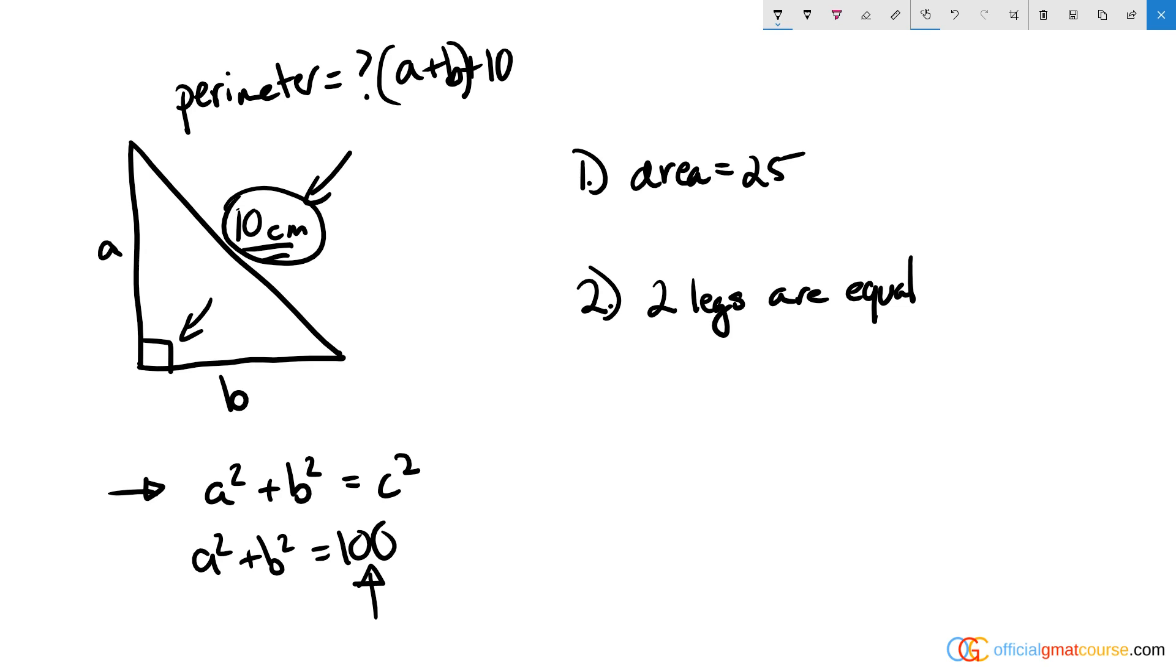Now the area in a right triangle is equal to ab/2. Statement one says the area is 25, which means that ab equals 50.